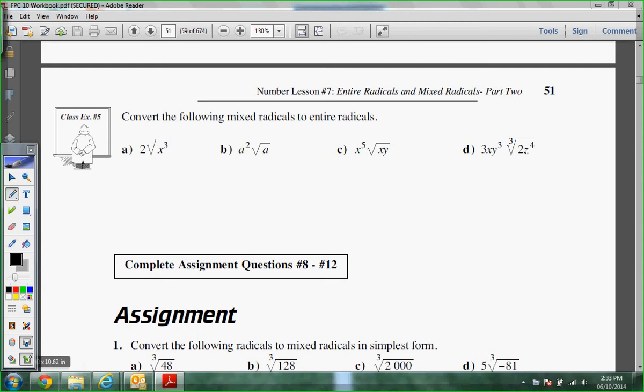Here we go on. We're making an entire radical. So we're going backwards doing our same stuff. We're still going to do what to the 2 here, Brandon? Push it in. What are we going to do to it? Square it. Because we're pushing it in. So it's 2 squared times X cubed. 2 squared is 4. X cubed stays X cubed. So right here is your entire radical.